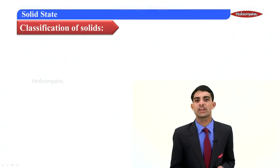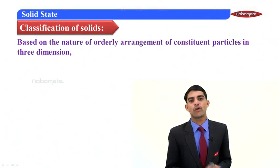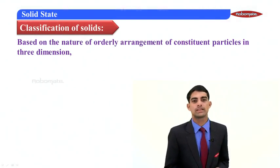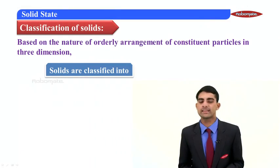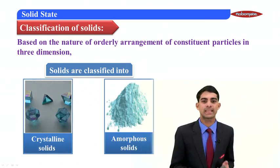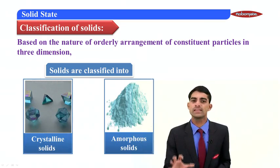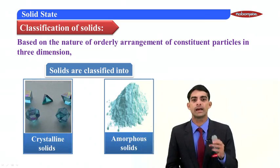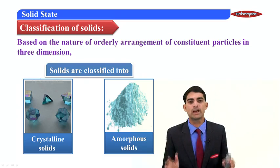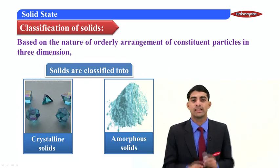Now, the classification of solids. Based on the nature of orderly arrangement of constituent particles, solids are classified into two types. The first one is crystalline solids and the second one is amorphous solids. A long-range orderly arrangement of constituent particles is known as crystalline solids.